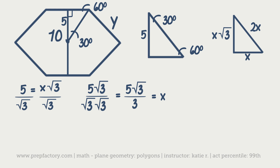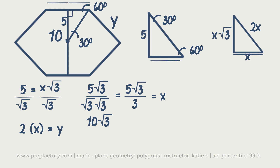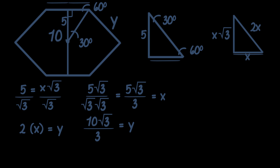Now that we know x = 5√3/3, we can find y — one whole side of the hexagon — which equals twice the shorter side (across from 30 degrees). So y = 2x = 2 × (5√3/3) = 10√3/3. That is our answer. Our next shape is the circle, which is the second most important shape on the test, behind triangles.